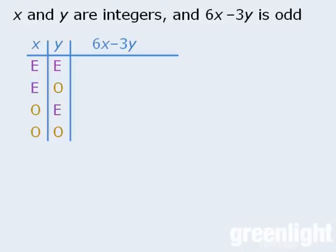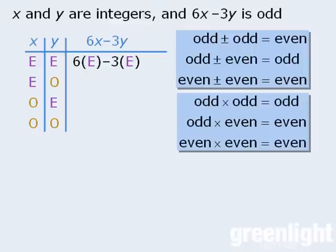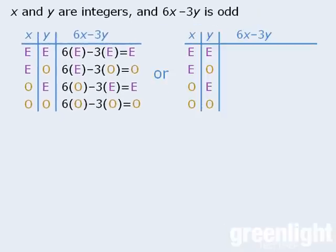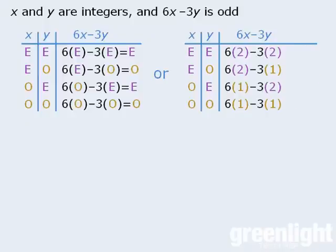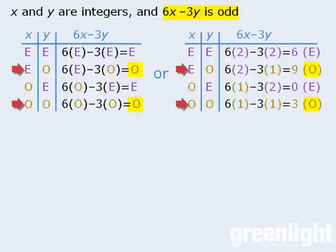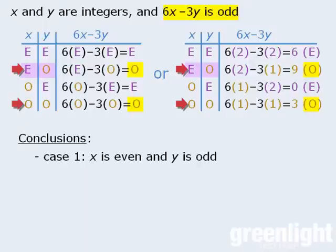We'll use the same strategy to examine the four possible cases. For the first case, we'll plug in e's to represent even numbers, and then by applying our rules, we can see that the expression evaluates to be an even number. Following the same steps, we can test the other three cases as well. Alternatively, we can plug even and odd numbers into our expression and then evaluate them to get identical results. We've now tested all possible cases. Now we're told that the expression evaluates to be an odd number. When we examine either of our tables, we see that there are two cases in which the expression evaluates to be an odd number. So there are two possible conclusions we can draw: either x is even and y is odd, or x and y are both odd. Either of these two cases can be true.